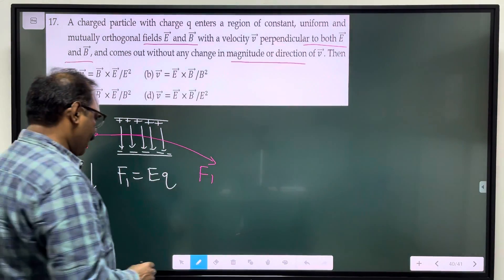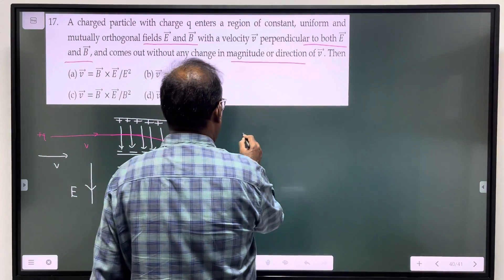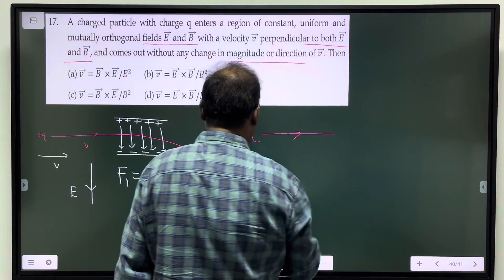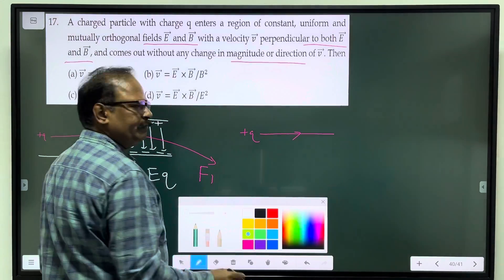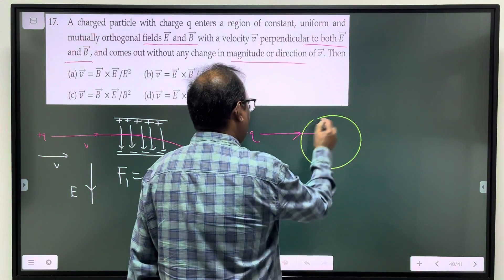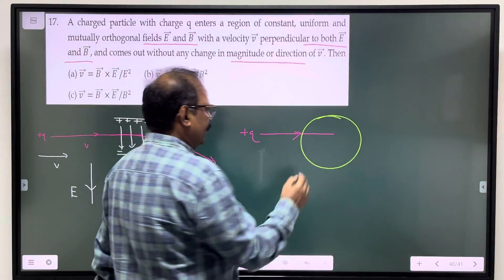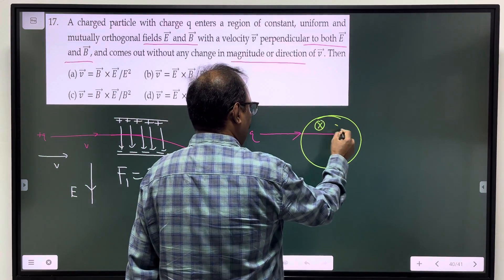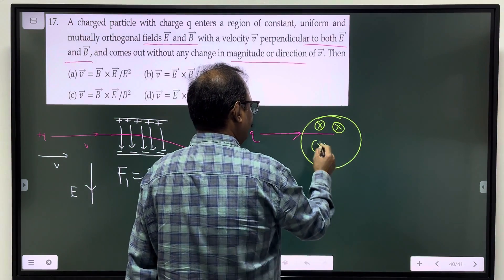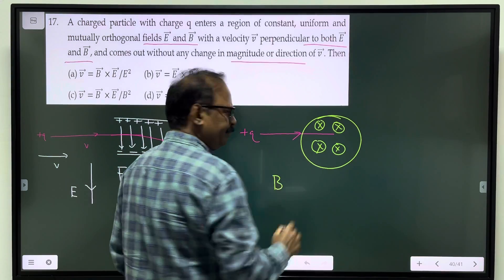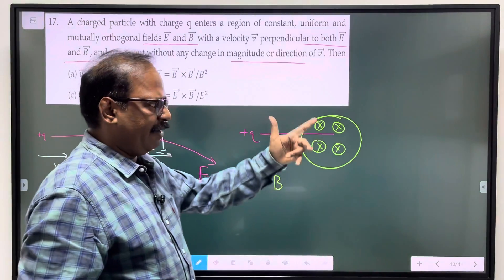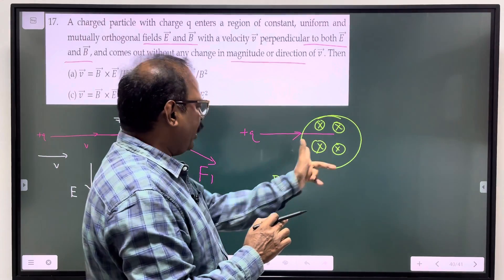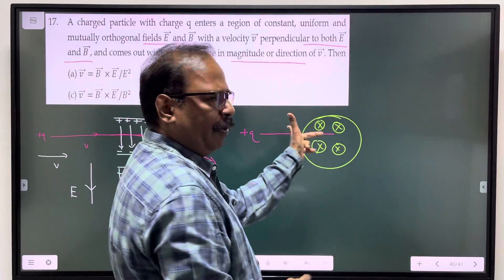Now if the charged particle goes inside a magnetic field, the magnetic field is perpendicular to the board. The magnetic field is going inwards with magnetic field strength B. Now according to Fleming's left hand rule, the magnetic field is going inwards and the velocity of the particle is this.